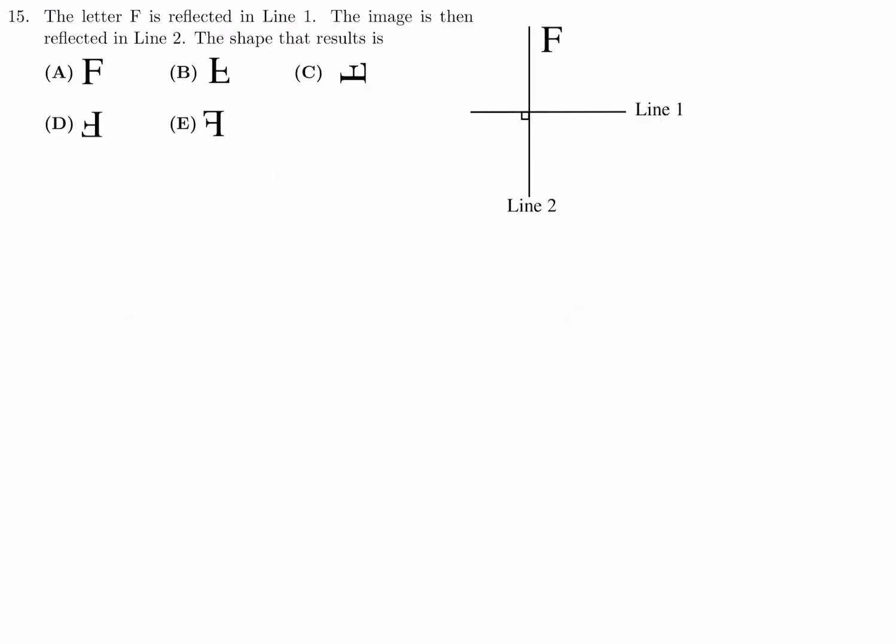The letter F is reflected in line one. The image is then reflected in line two. The shape that results is... All right. So first, it's reflected in line one, right? So when it's reflected here in this horizontal line, it will look like this. Exactly like, you know, if line one was a mirror, that kind of thing. Now, this is reflected in line two, this vertical line. Okay. That means it will look like this. Okay. So, I mean, I didn't draw it 100% like that. I mean, I'm not a typewriter. But you get the idea. So of the answer choices, which one looks like this? I'll take a look at the answer choices. And you will see that it is choice D for number 50.